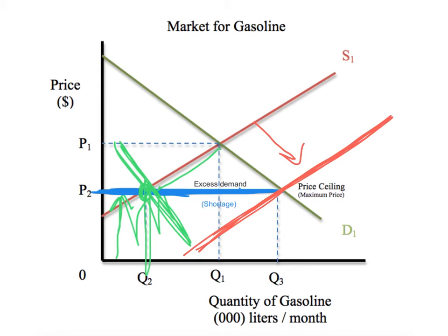The most logical thing for the government to do is to push the supply curve outward to meet the demand of Q3 in the marketplace. The easiest way to do this is a subsidy. They could also start to produce the gasoline themselves, increase the number of suppliers, or release previously stored stocks of gasoline. But in any event, the most logical solution is for the government to get involved again and figure out how to push the supply curve outward.